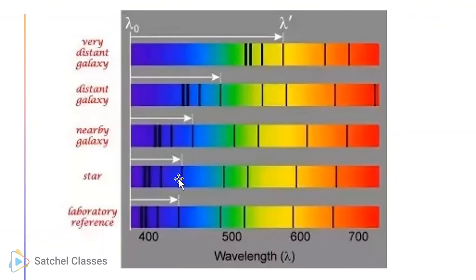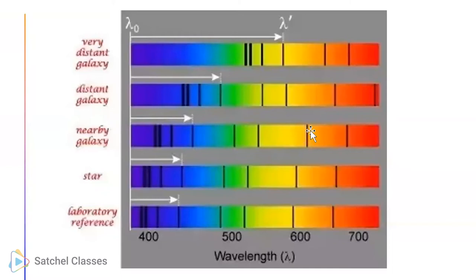So we're looking for the hydrogen lines. They match up, but they're a little bit moved over. A nearby galaxy - moved a little bit further over. Distant galaxy - everything's moved this way. Very distant galaxy - this line's completely disappeared because it moved so far over.